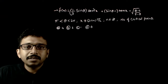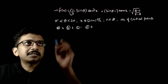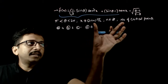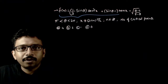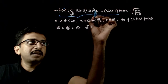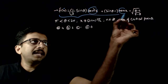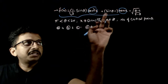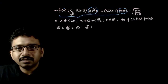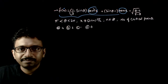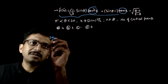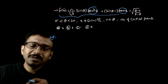Welcome students. In this question, you are given a function f(x) and asked to find the number of critical points of this function. It is a function in terms of x, containing tan³x and tan x, with coefficients in terms of theta, where theta is some angle between π and 2π.